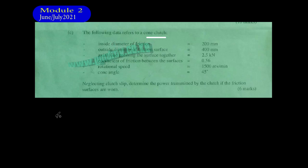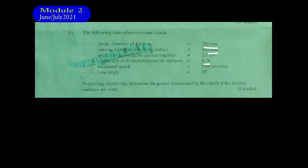Welcome. We have another question here. The following data refers to a cone clutch. This question is about clutches, so let's begin. They are saying inside diameter 200 millimeters, outside diameter of the friction surface 400 millimeters, coefficient of friction between the surfaces 0.56. Let me document them down.